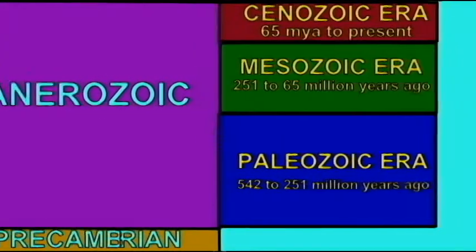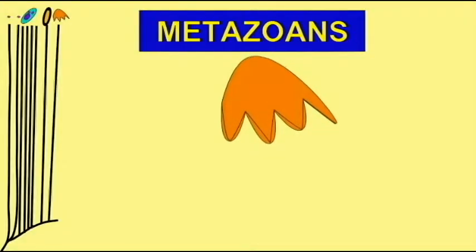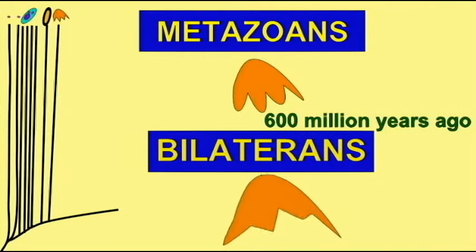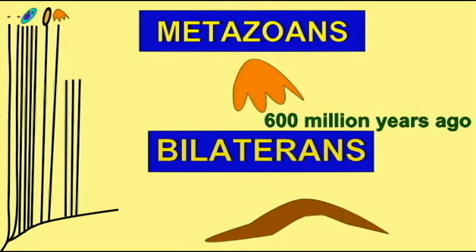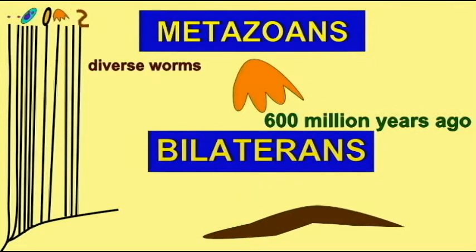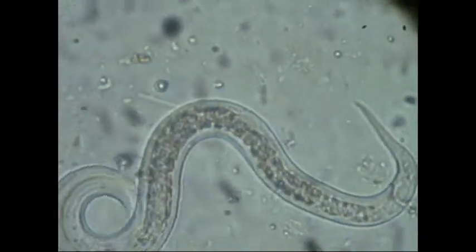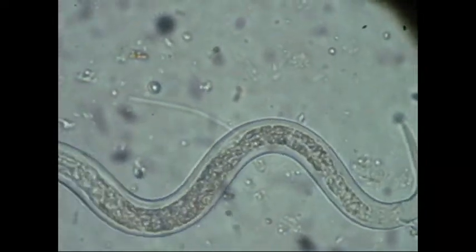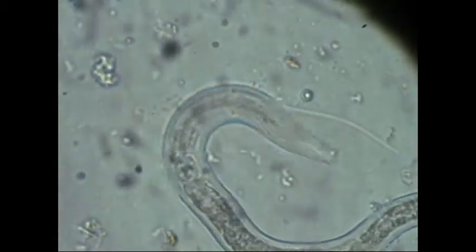Bilaterian animals are more complicated than the cnidarians. They have a brain and a spinal cord. While many of the simplest bilaterians are simple worms — close to the level of complexity of jellyfish — there are far more complex worms which have a complete digestive system, complex eyes, and even a coelom. Bilaterians are more complex than cnidarians, and are known in the Ediacaran period, becoming quite diverse by the end of the Ediacaran period.